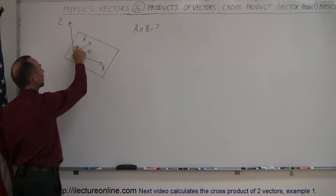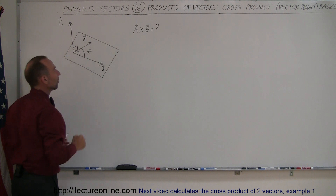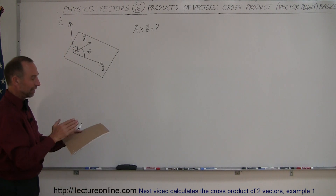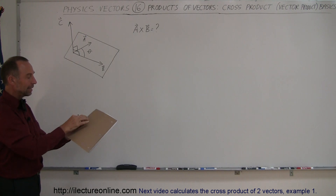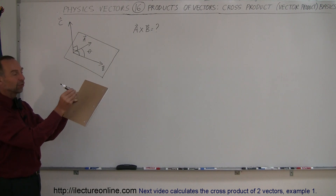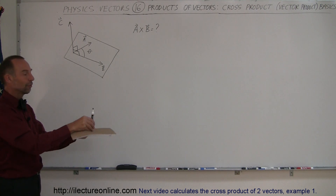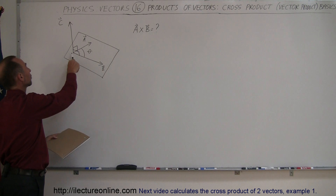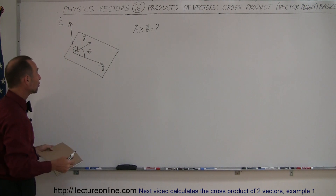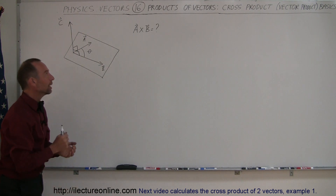Vector C will be perpendicular to A and perpendicular to B — that's what these symbols mean: a 90-degree angle between C and A, and a 90-degree angle between C and B. So no matter what the direction of the plane is, the cross product will always give you a vector perpendicular to the plane made by vectors A and B.